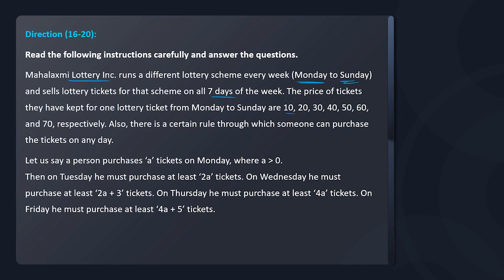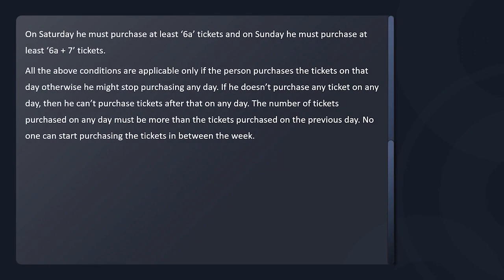Also, there is a certain rule with which someone can purchase the tickets on any day. Let's say a person purchases A tickets on Monday. Then on Tuesday, he must purchase at least 2A. So second day it can be 2A or more than that. Third day it will be more than or equal to 2A plus 3. Similarly 4A, 4A plus 5. Similarly 6A, 6A plus 7. All the above conditions are applicable only if the person purchases a ticket on that day. Otherwise, he might stop purchasing on any day — if you purchase, the rule applies; otherwise you can stop.